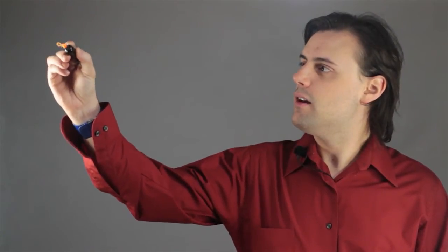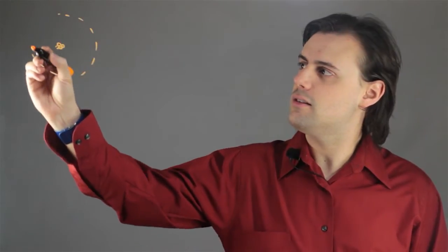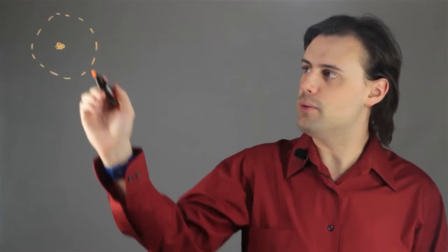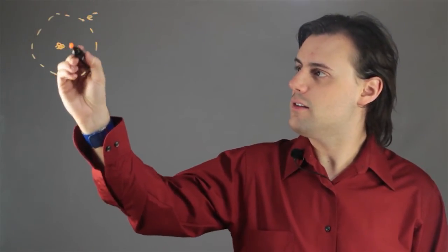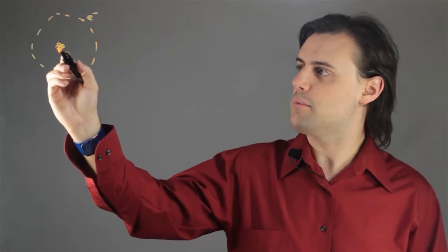An atom is a composite particle, meaning that it's comprised of multiple more fundamental constituents such as an electron and this nucleus, which is made up generally speaking of neutrons and protons.